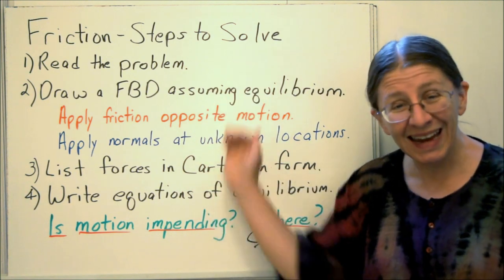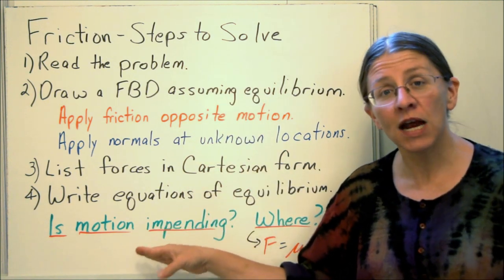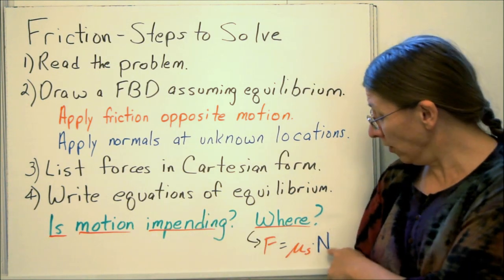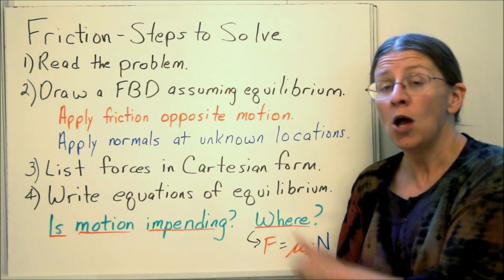I haven't assumed anything yet. But this is the question, the key phrase for you: Is motion impending, and if so, where? Where motion is impending, you can assume that f equals μs times n, but only there.